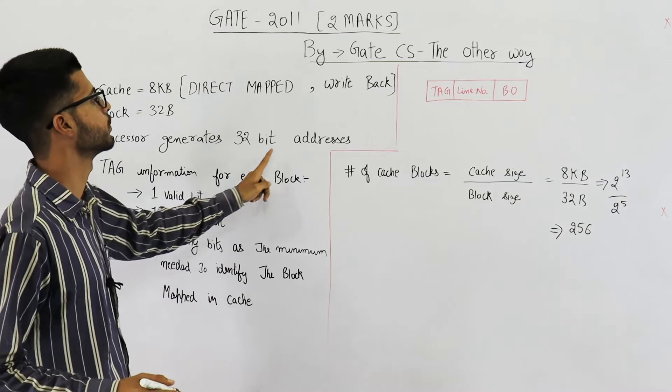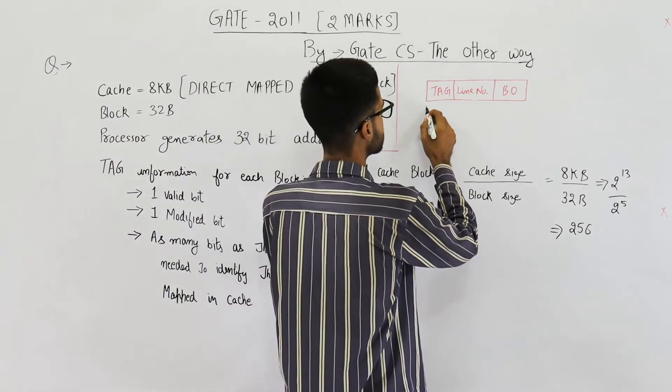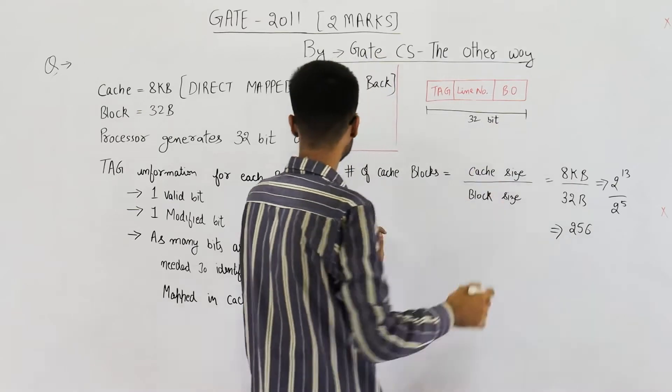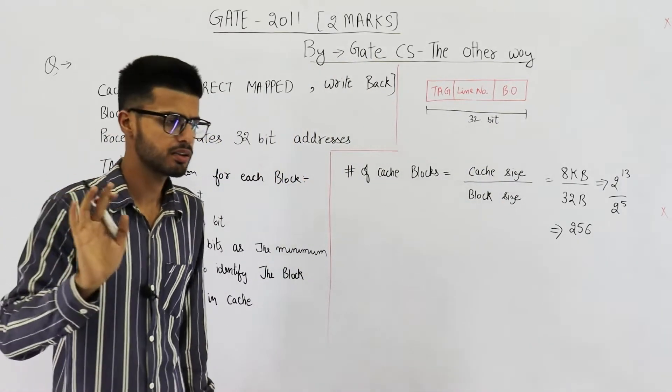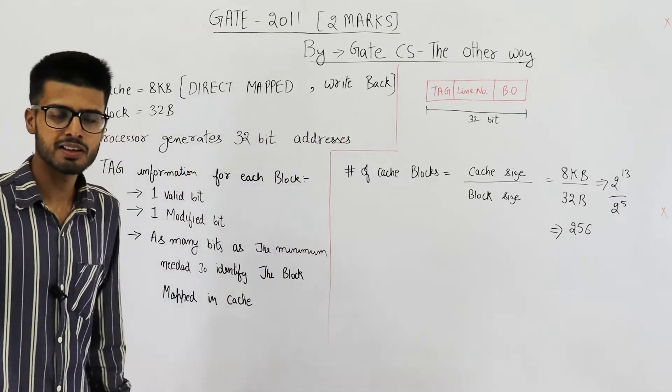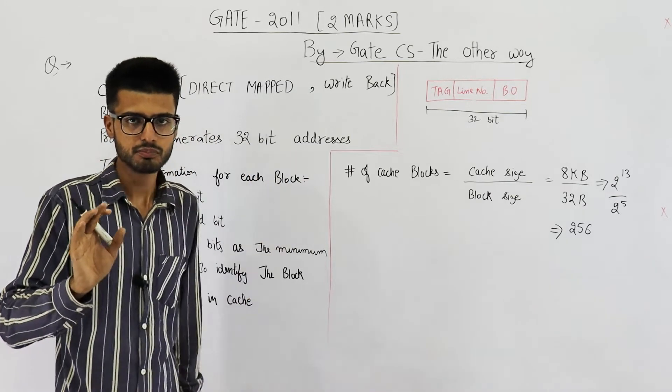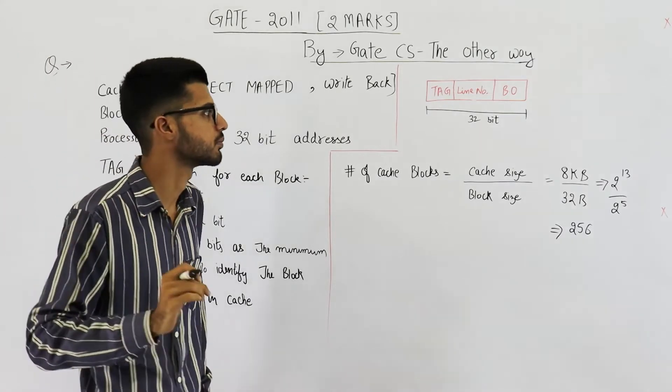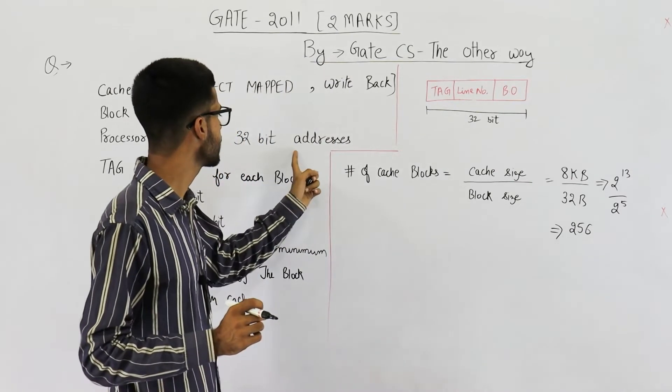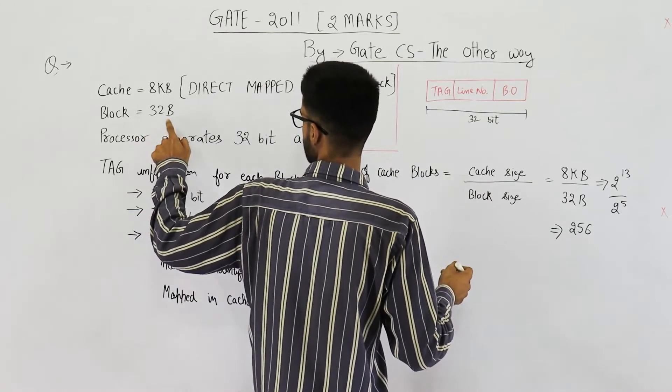Processor generates 32-bit addresses. That means physical address is a 32-bit address. This in total will be 32-bit. Actually processor generates logical addresses but don't go into that detail. What they mean by this line is after converting a logical address, we get a physical address which is 32-bit. That's from the perspective of operating systems. Now we are worried about physical addresses only.